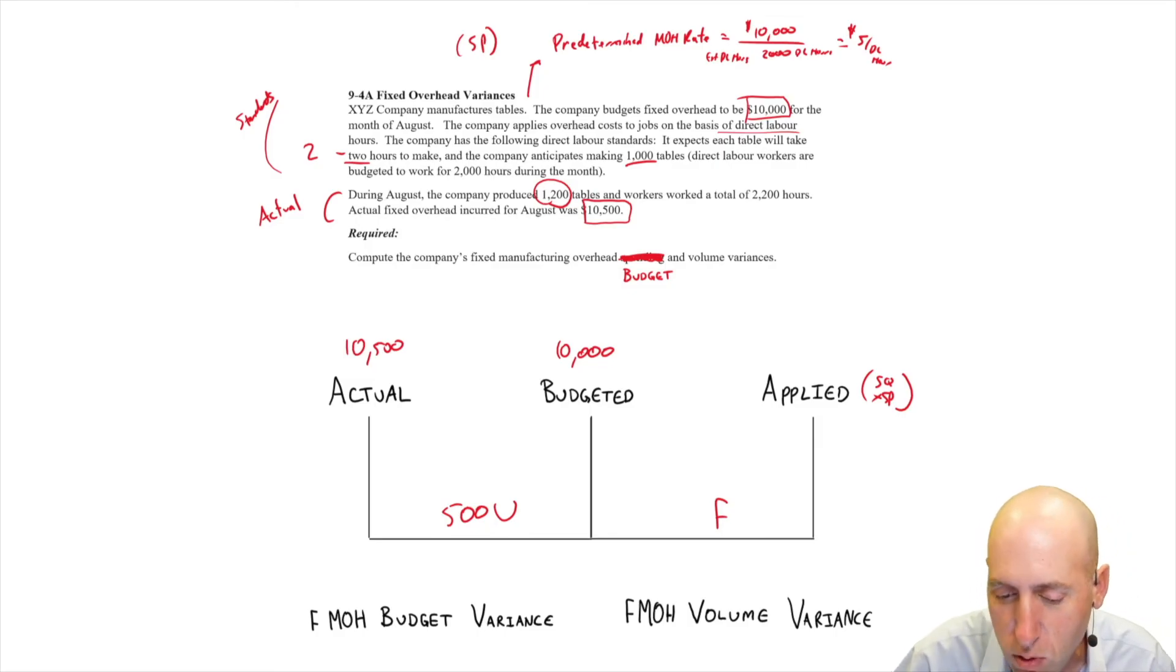But let's get to it. It's applied overhead, SQ times SP, we have our SP $5. Our SQ, we have to say, given the actual level of output, given the actual 1200 tables we made, how many hours should it have taken? Well, it should have taken two hours per table. So 1200 tables got made times two hours per table, it should have taken 2400 hours. That's our SQ. So 2400 hours times that predetermined overhead rate of $5 an hour gives us 12,000.